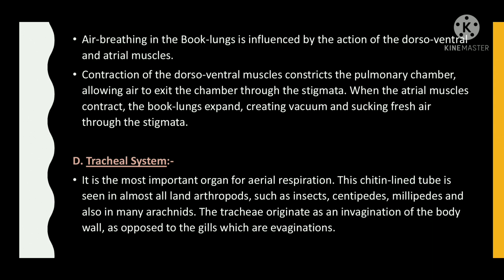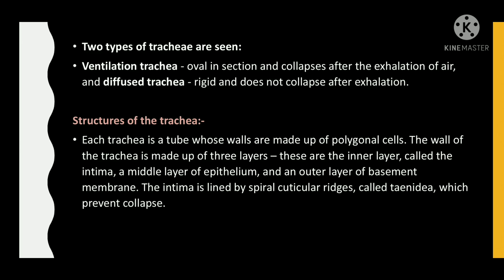Tracheal system: It is the most important organ of aerial respiration. This chitin-lined tube is seen in almost all land arthropods such as insects, centipedes, millipedes, and also in many arachnids. The tracheae originate as an invagination of the body wall, as opposed to gills which are evaginations. Two types of tracheae are seen: ventilation tracheae, oval in section and collapses after exhalation of air; and diffuse tracheae, rigid and doesn't collapse after exhalation.